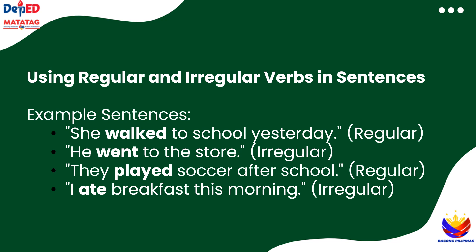Let's see how regular and irregular verbs look in sentences. Walk is a regular verb because we added -ed. He went to the store — go changes to went, making it irregular. They played soccer after school — play is regular because it adds -ed. I ate breakfast this morning — eat changes to ate, so it's irregular.